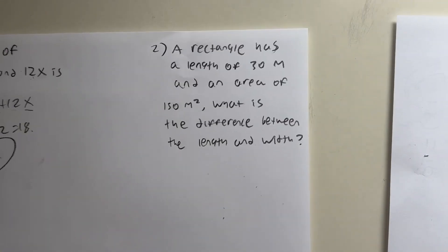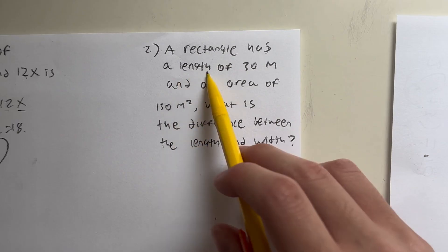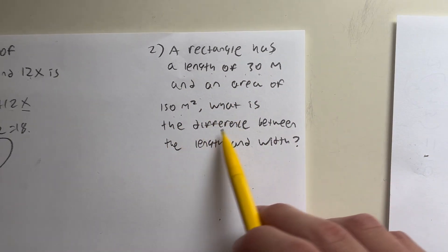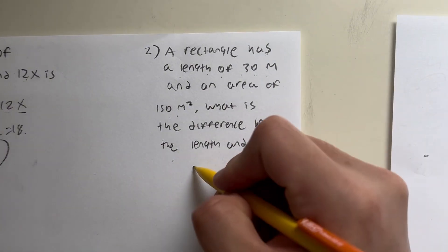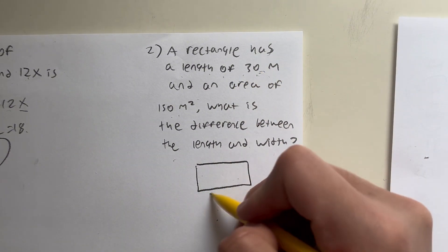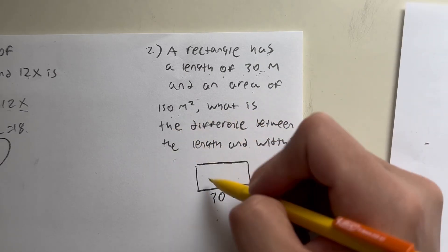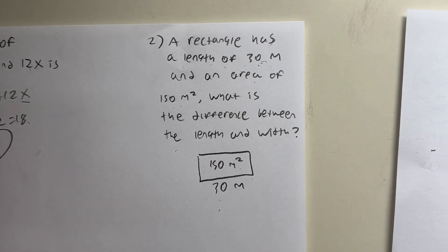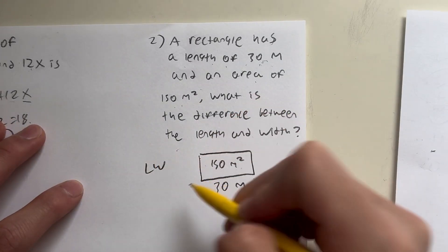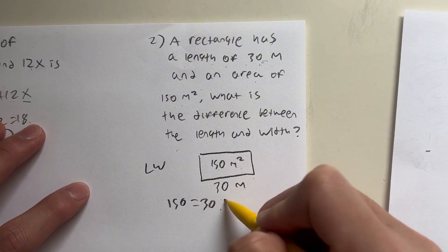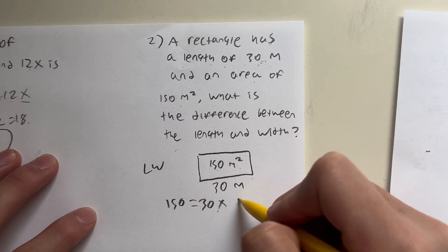Moving on to the second question, we have a rectangle has a length of 30 meters and an area of 150 square meters. What's the difference between the length and the width? So let's first draw out a rectangle. Now we know that it has a length of 30 meters, that gives us that, and an area of 150 square meters. So how do we figure out the area of a rectangle? That's just length times width. So our area, 150, is equal to 30 times some number, which we'll call x.